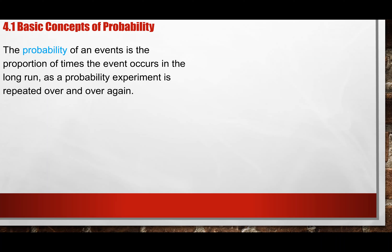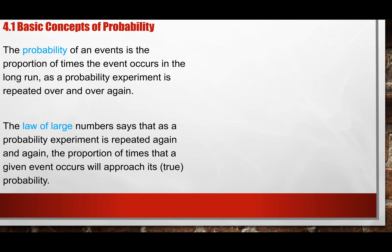The law of large numbers basically tells you that if you do the same experiment over time, the probability will come out to be the true probability.